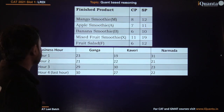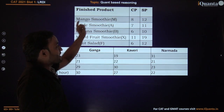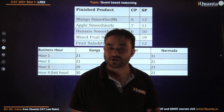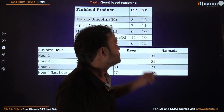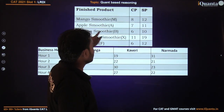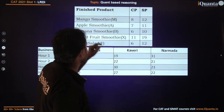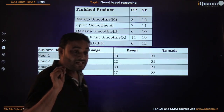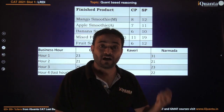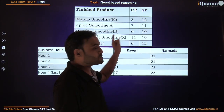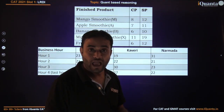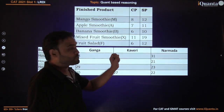Now let's build the price table. Mango smoothie: cost eight rupees, selling price twelve rupees. Apple smoothie: cost seven rupees, selling price eleven rupees. Banana smoothie: cost six rupees, selling price ten rupees. Mixed fruit smoothie uses four raw materials, so profit is eight rupees; cost eleven rupees, selling price nineteen rupees. Fruit salad uses three raw materials — mango, apple, banana — cost six rupees, selling price twelve rupees.